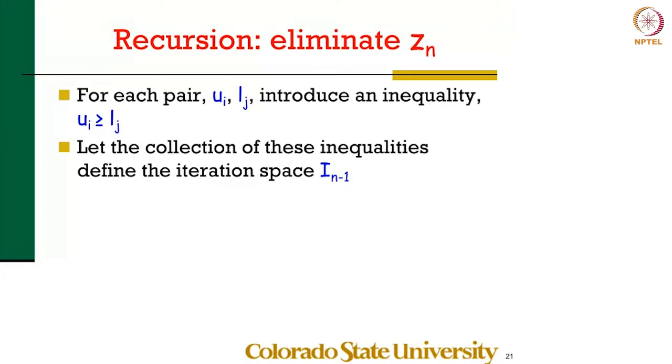So pairwise, you pair all the lower bound expressions with all the upper bound expressions and get inequalities that involve only the n minus 1 indices. Once you have constructed this, you recurse and find the bounds on the innermost dimension of that.